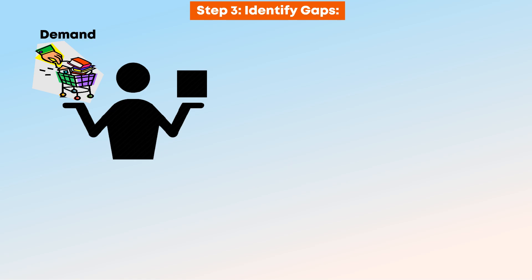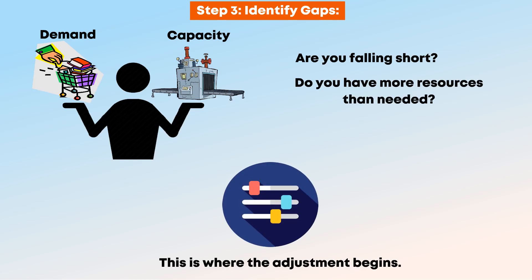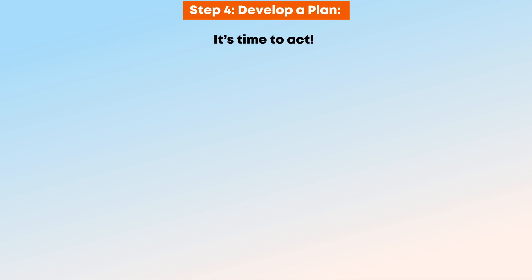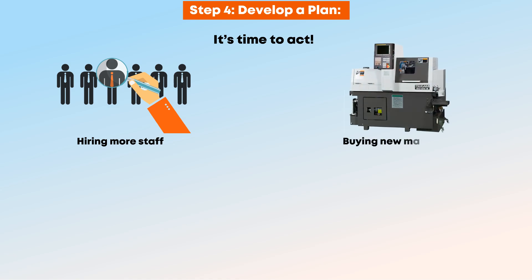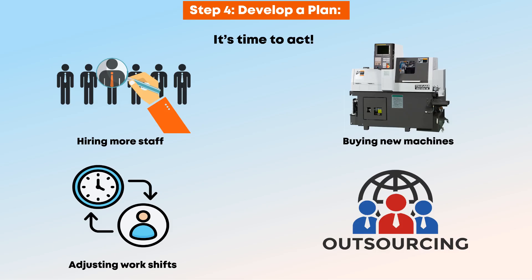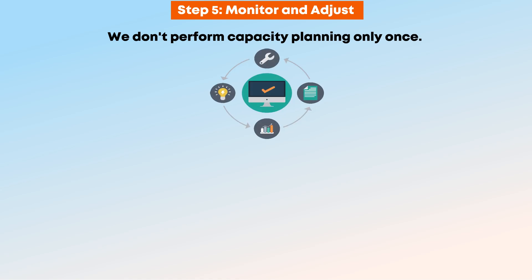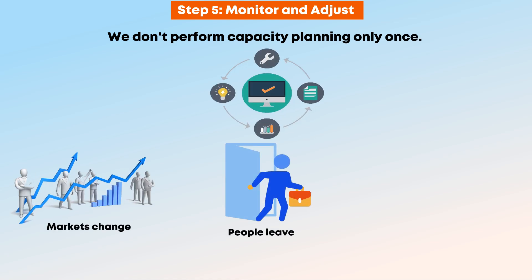Step 3: Identify Gaps. Compare demand with available capacity — are you falling short, or do you have more resources than needed? This is where the adjustment begins. Step 4: Develop a plan. This may include hiring more staff, buying new machines, adjusting work shifts, or outsourcing work temporarily. Step 5: Monitor and adjust. Capacity planning is not performed only once — it's a continuous process. Markets change, people leave, machines break, so you must keep reviewing your plan regularly.